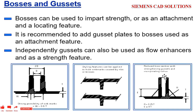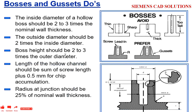Here, E is the gusset height. Gusset height should not be equal to or less than 4 times T (nominal thickness), with a radius of 0.5 times the nominal thickness. The height of the screw boss should be 2 to 4 times the nominal thickness. Inside diameter of a hollow boss should be 2 to 3 times the nominal thickness.